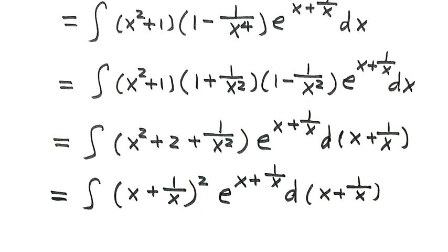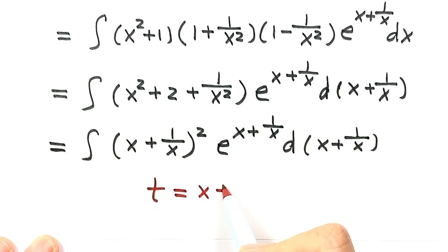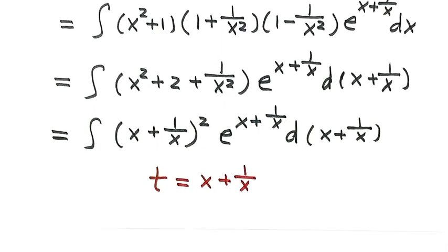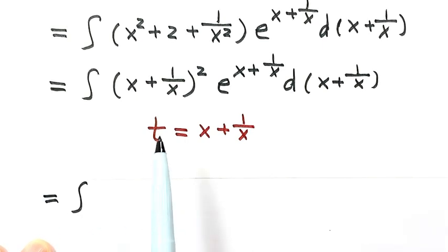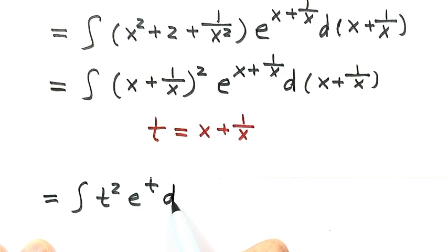So I'm going to do a substitution. Let t equal x plus 1 over x. Then use t to replace this part. Let's do the substitution. This one is just t squared. So here: t squared, e to the power t, then dt.